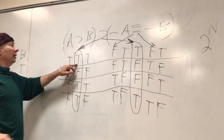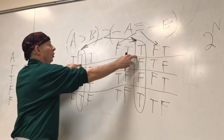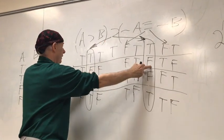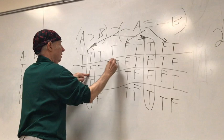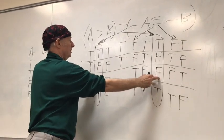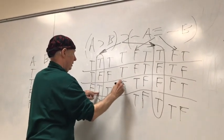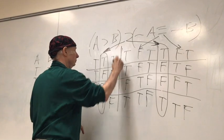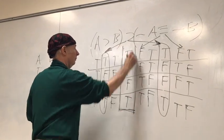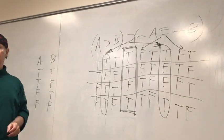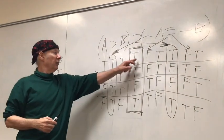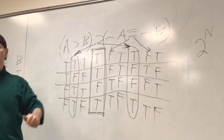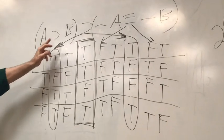We apply the horseshoe: T horseshoe T, T horseshoe F, T horseshoe F, T horseshoe T. We're finished building the truth table. It is this final column that tells us the truth value of the entire WFF given the truth values we assign to A and B.